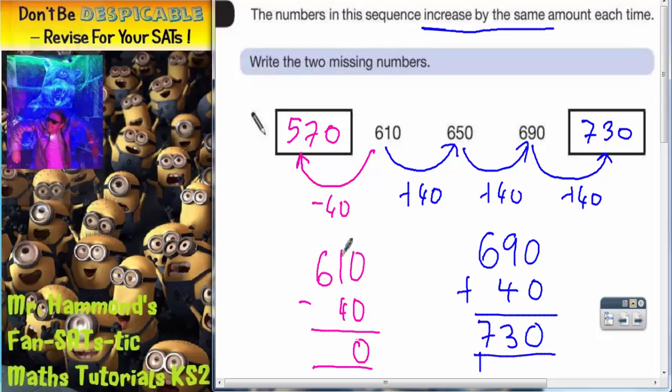0 take away 0 is 0, 1 take away 4 we can't do so we'd have to borrow one, carry the 1 there. 11 take away 4 is 7 and 5 take away nothing here is still 5. So it is indeed 540.